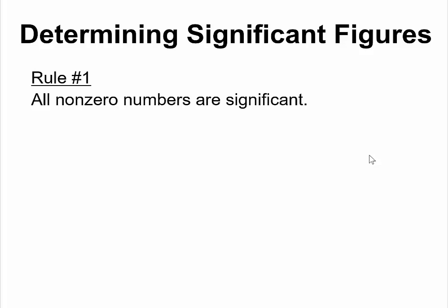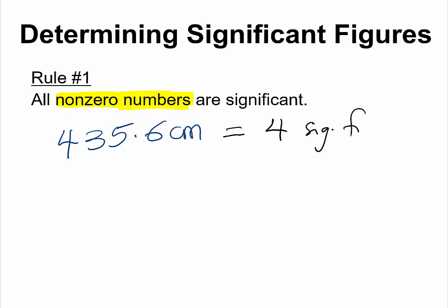Rule number one: all non-zero numbers are significant. Take a look at this measurement: 435.6 centimeters. Since all of the digits here are non-zero, that means this will be a four significant figures number. That is rule number one.